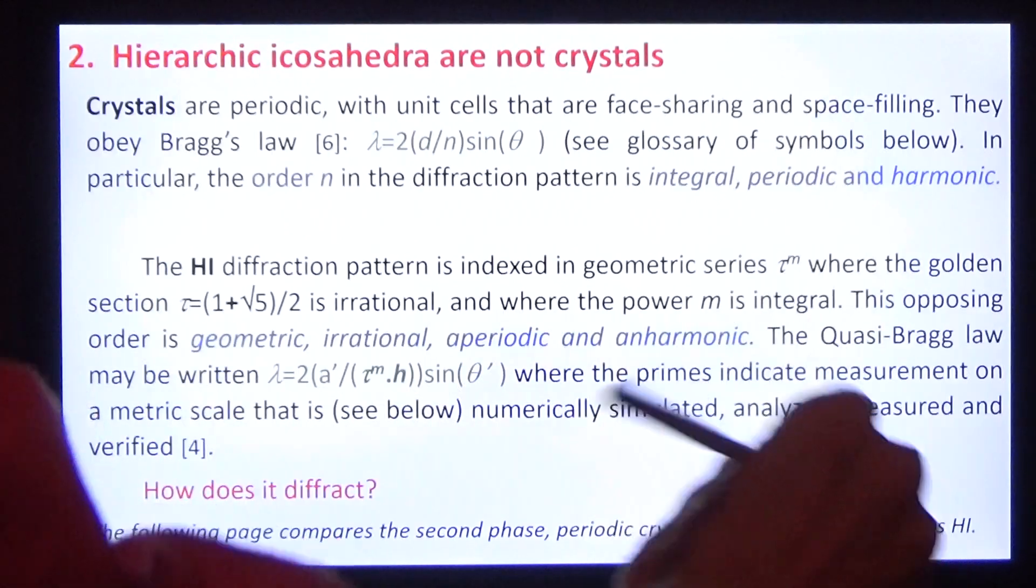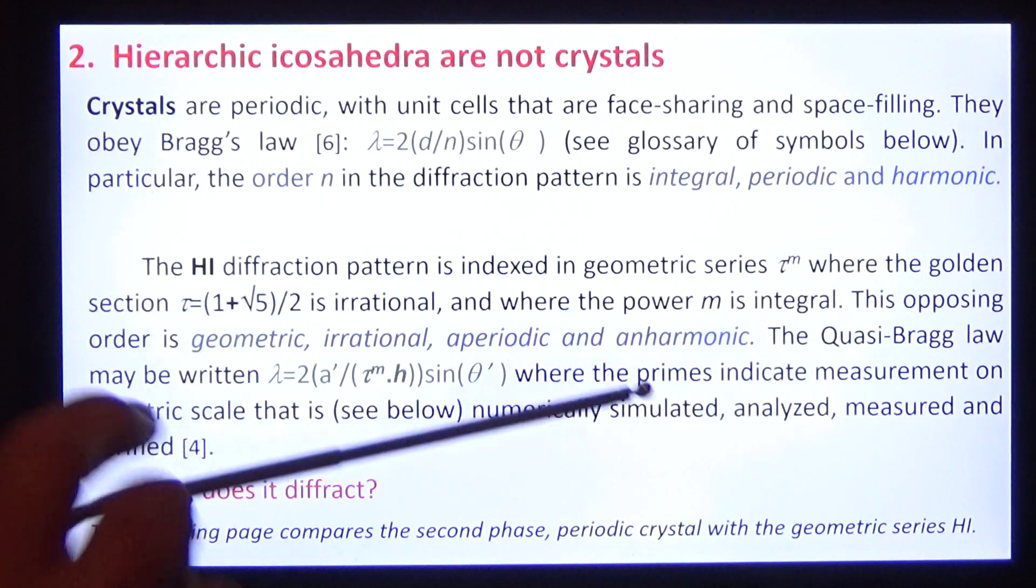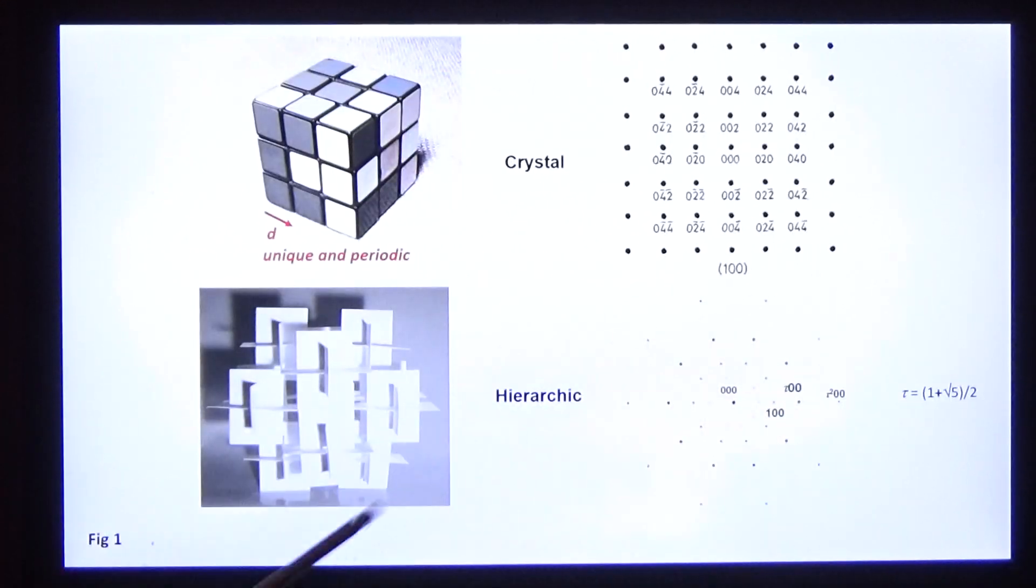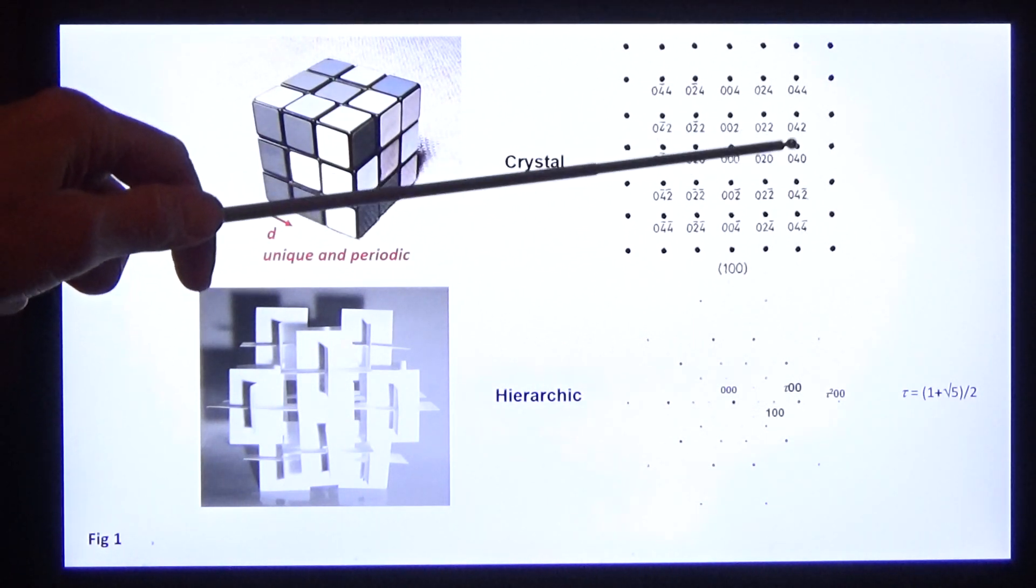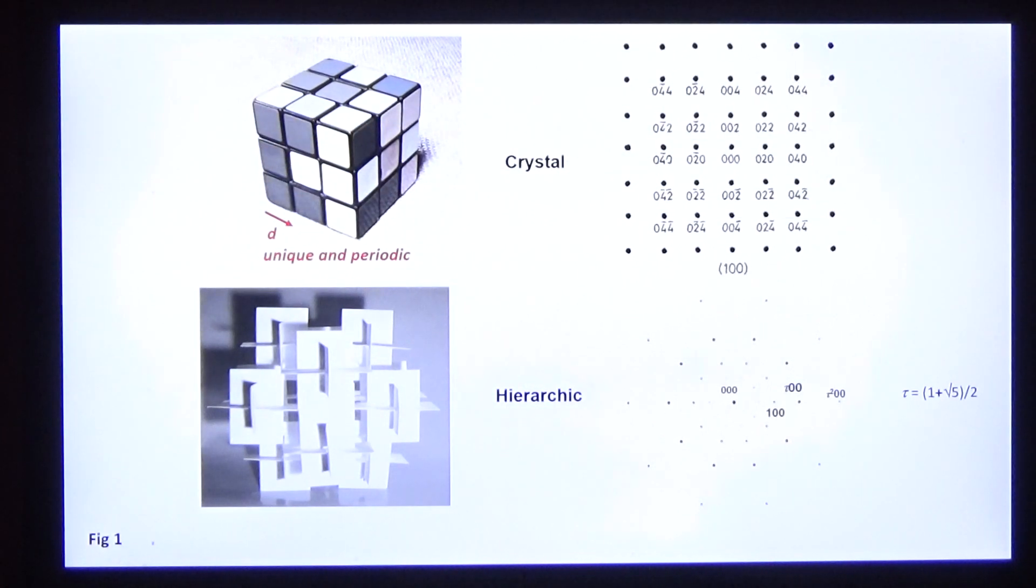So what is a crystal? The icosahedra are not crystals, but the second phase follows Bragg's law: n lambda equals 2d sin theta. Here's n: 0, 1, 2, 3, 4, 5, 6. In this instance, odd orders are suppressed by structure factors.